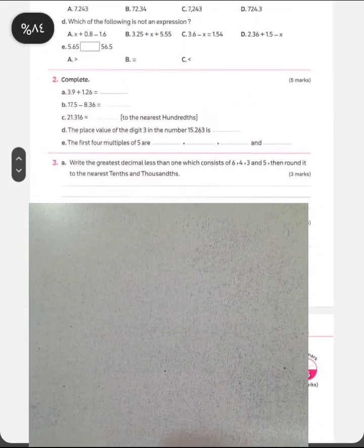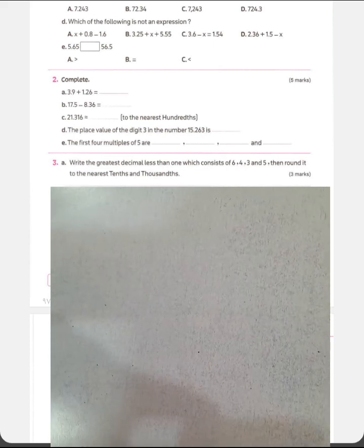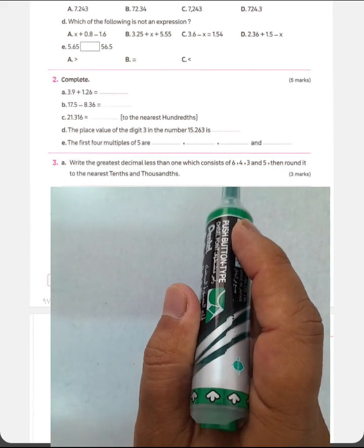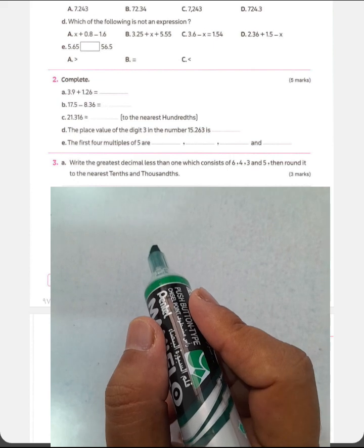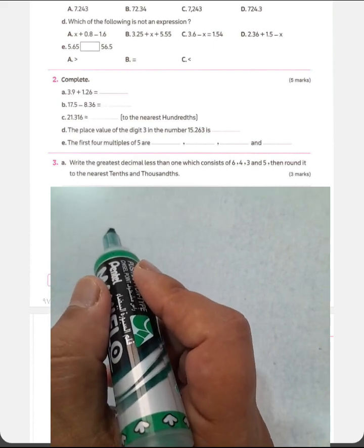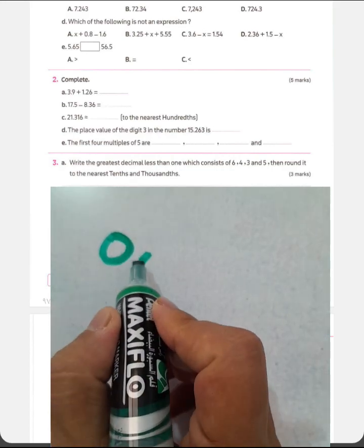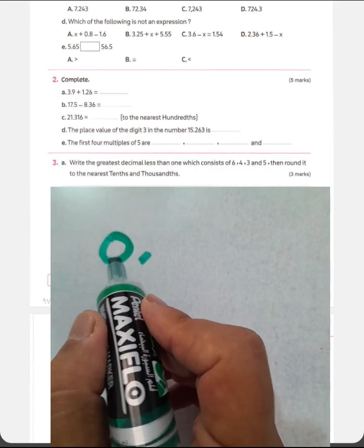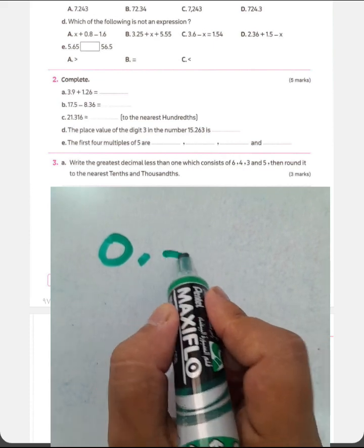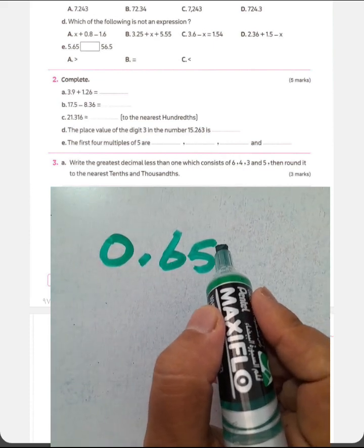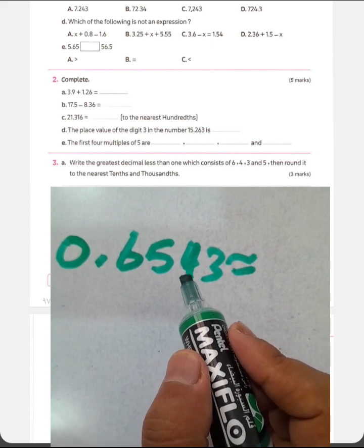Question number 3. Letter A. Write the greatest decimal less than 1 which consists of 4, 6, 3, and 5. Then round it to the nearest tenths and thousandths. In this example about letter A we can find the greatest decimal number consists of 6, 4, 3, and 5. Less than 1 we must put 0 in the first and then write the point here. We want to find the greatest decimal less than 1 by using these numbers here consists of 6, 4, 3, and 5. You can write the greatest digit here 6, and then 5, and then 4, and 3.